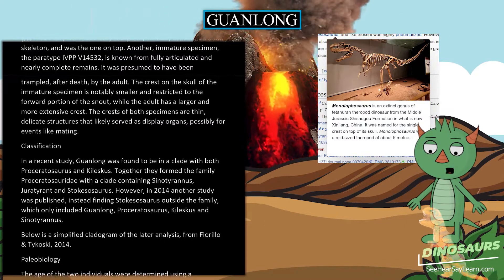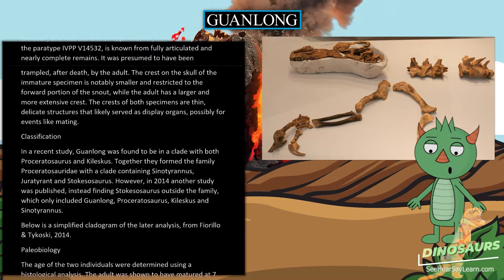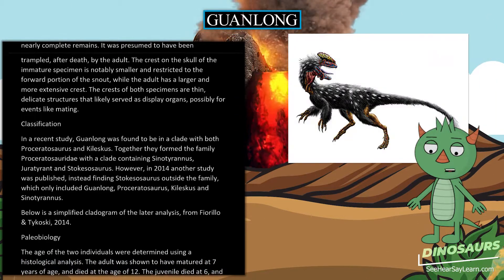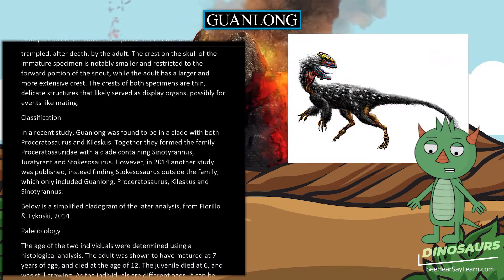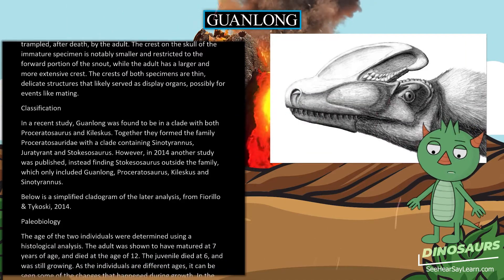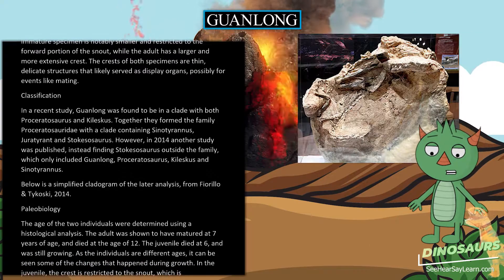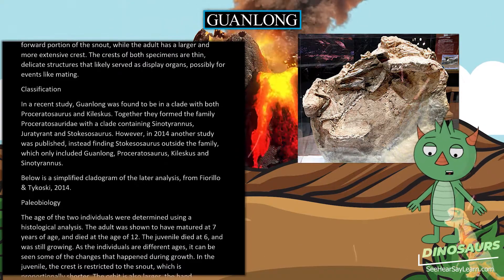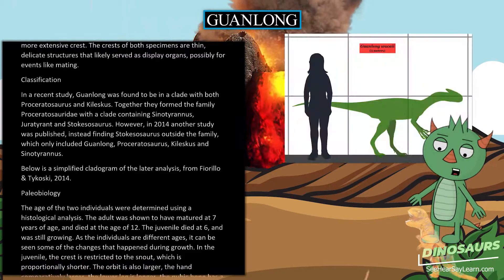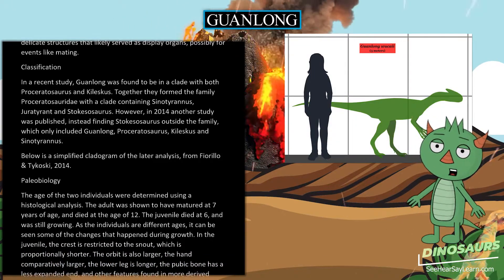In a recent study, Guanlong was found to be in a clade with both Proserratosaurus, together forming the family Proserratosauridae, along with a clade containing Juratyrant and Stokesosaurus. However, in 2014 another study found Stokesosaurus outside the family, which only included Guanlong, Proserratosaurus, Kileskus, and Juratyrant. A simplified cladogram was presented in the later analysis by Fiorillo and Tykoski (2014).